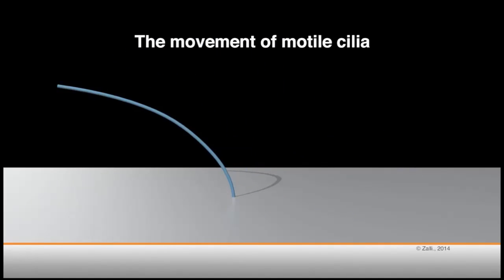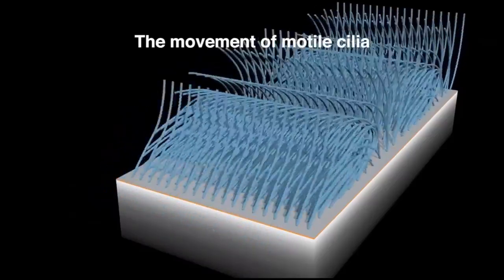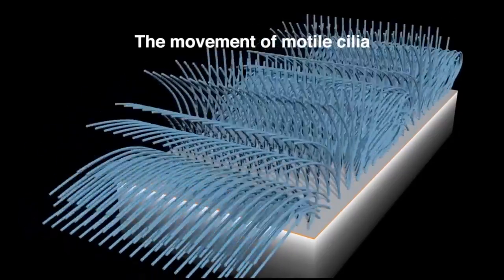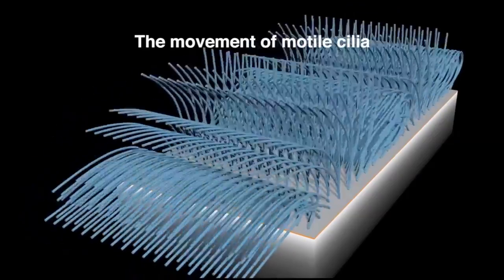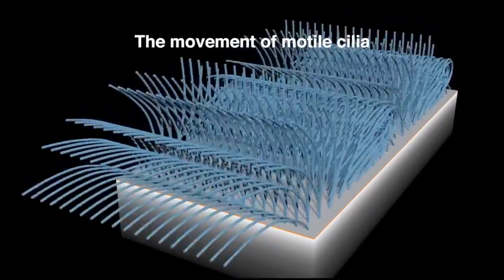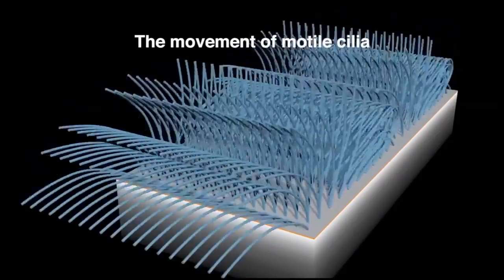Each cilia performs a repetitive beat cycle consisting of a rest state, recovery stroke, and an effective stroke, as shown in this animation from left to right. Normally they are present in large numbers that consist of 200 to 300 individual cilia per cell, and they beat in an orchestrated wave to move material over the surface of the cell. For example, mucus ciliary clearance in the lung, cerebrospinal fluid movement in the brain, and ovum and sperm transport along the reproductive tract.